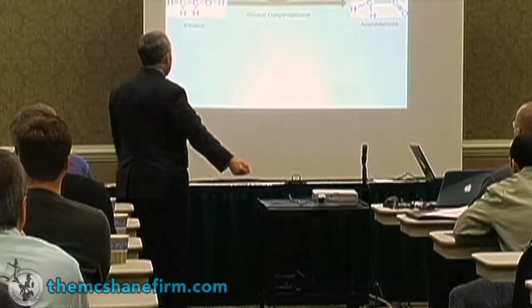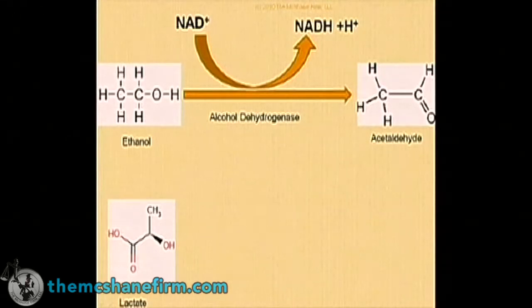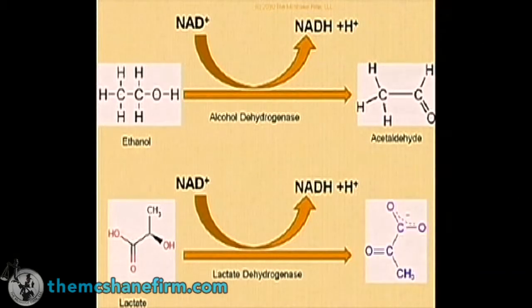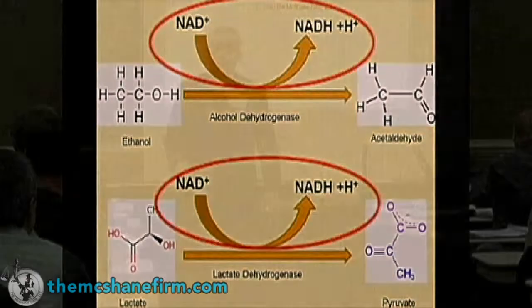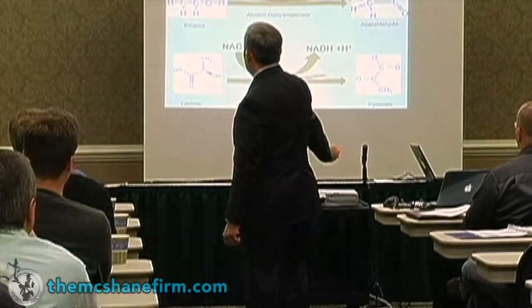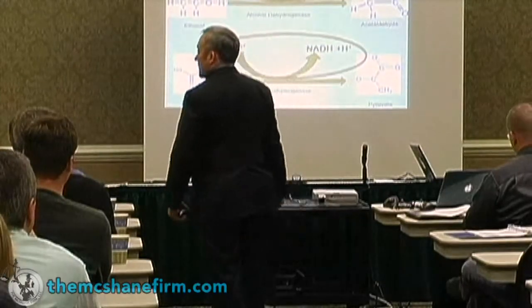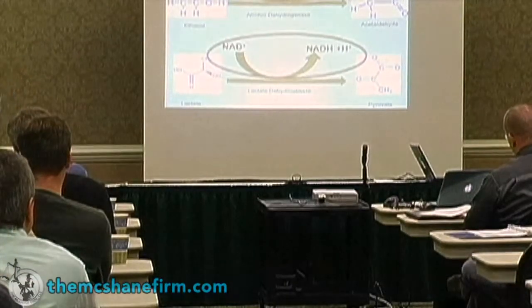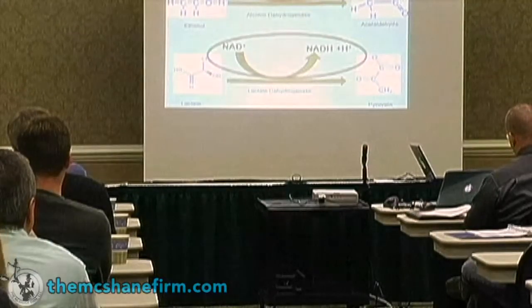I don't expect anyone here to really understand the chemistry, but I'm going to show you why this is important. If you have lactate and apply the same exact principle — taking NAD+ — it converts into NADH plus H+ via lactate dehydrogenase, and results in pyruvate. The problem is the hospital blood test is only looking at one particular wavelength, and that portion it measures is identical to lactate. This machine cannot tell the difference if the reaction is due to ethanol — something the person drank — or lactate. It is blind to that difference.